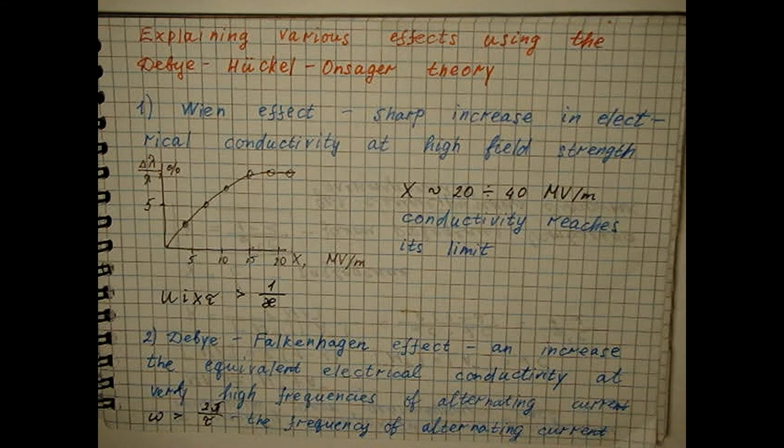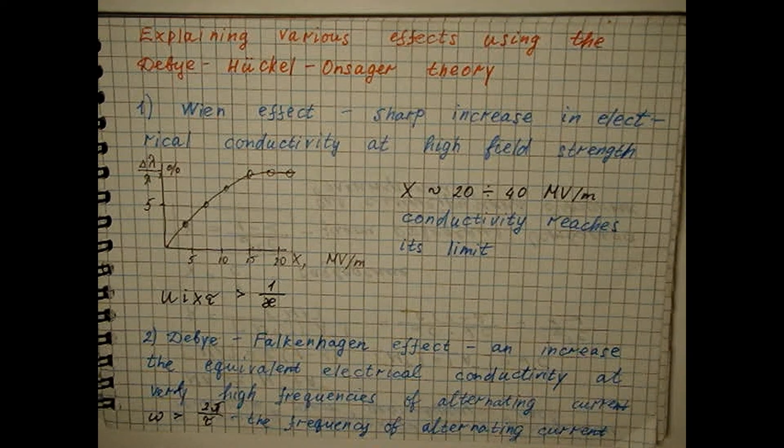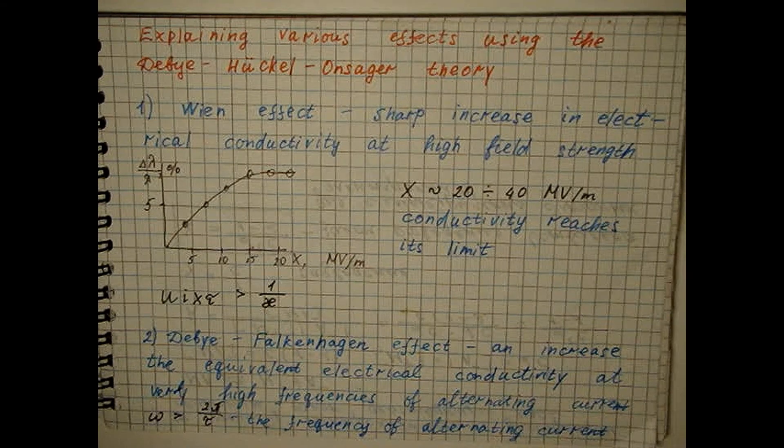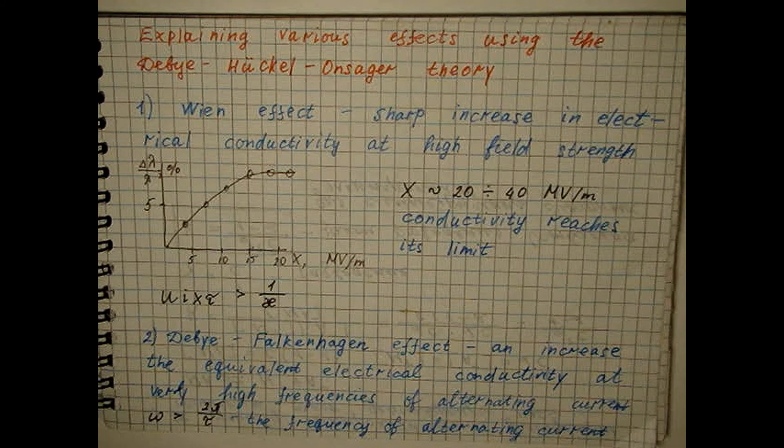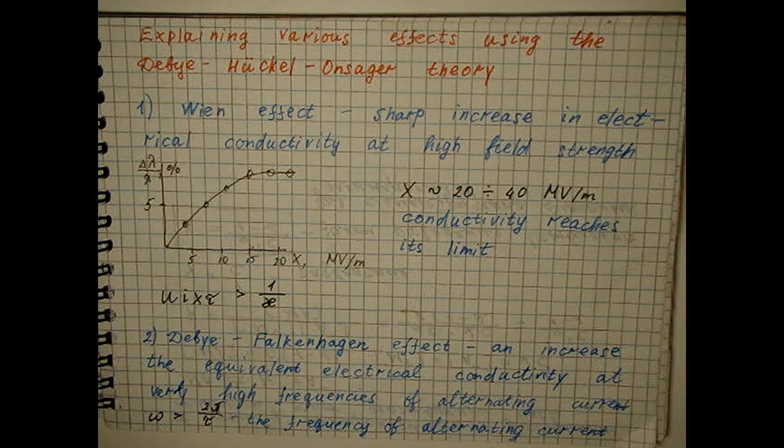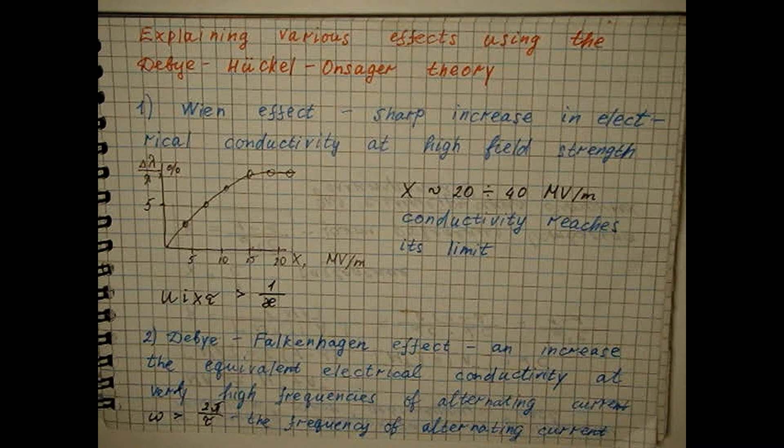At the same time, the electrophoretic effect of inhibition desists and the electrical conductivity does not reach its limiting value. Wien measured conductivity using high-frequency alternating current and confirmed the existence of the Debye-Falkenhagen effect.